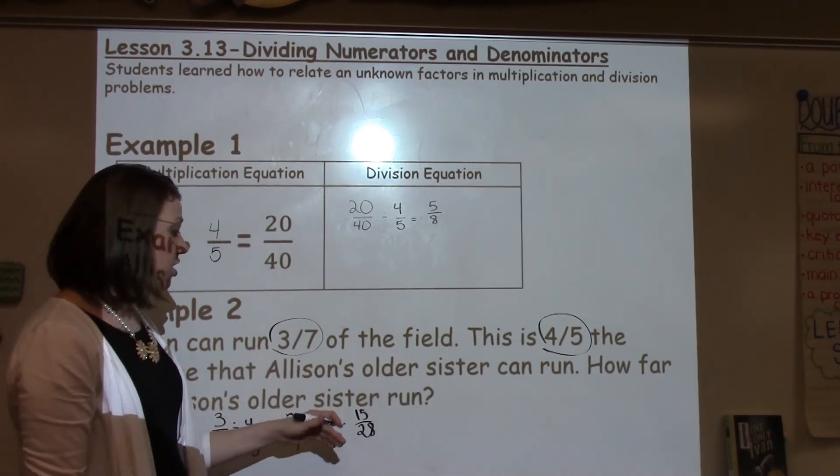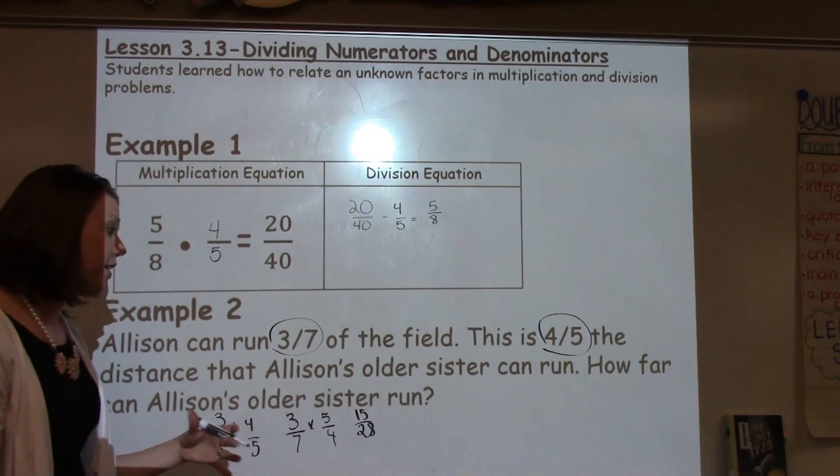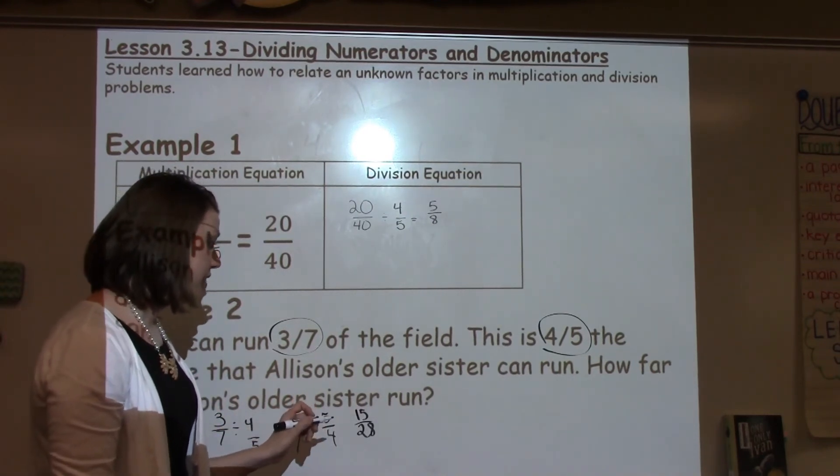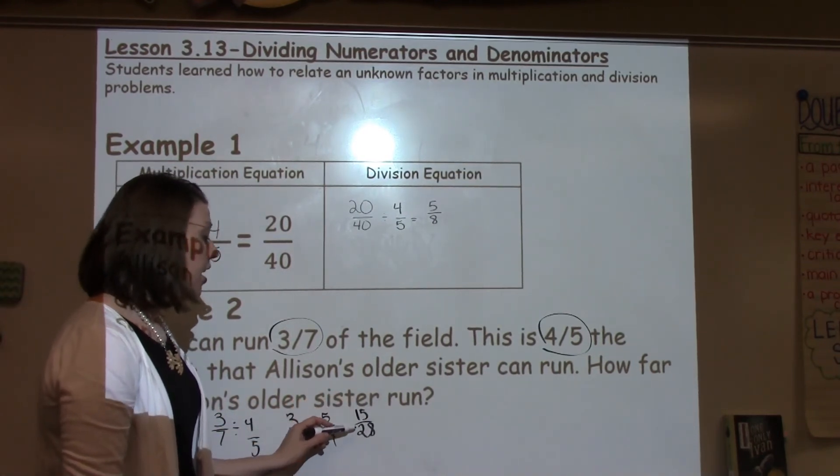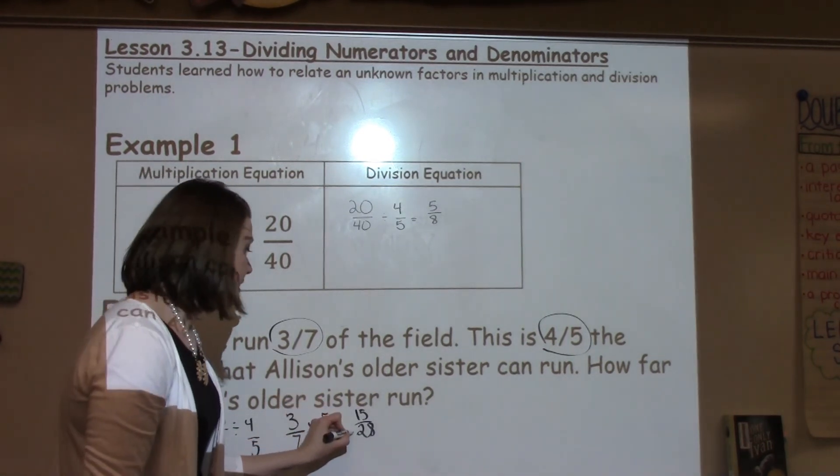Now, I'm looking at this fraction. Can I reduce it? When I think about the factors of 15, I know that they're 3 and 15. And those things cannot be evenly divided into 28. So, I know this is as reduced as it can go.